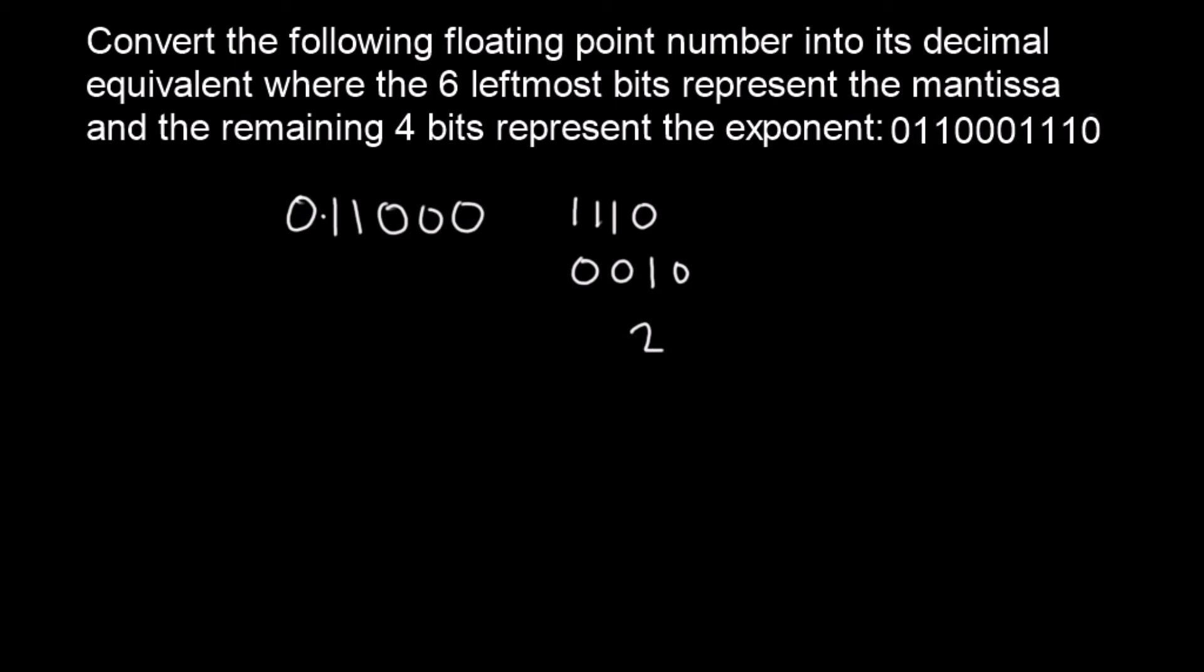And we now need to move our implied point two bits to the left this time. So two bits to the left. So we're going to take our point and go 1, 2.